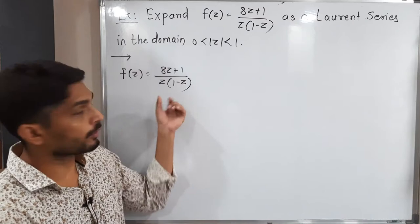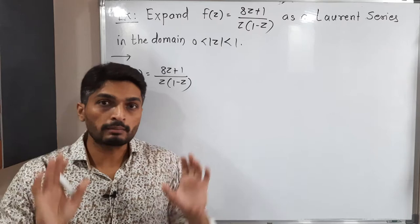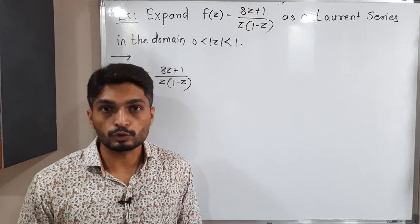Our first task is to make it separate. In denominator there are two terms z and 1 minus z, so we have to make them separate. We are going to use partial fraction technique to make them separate. Let us do that.